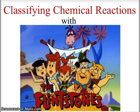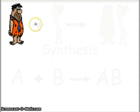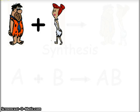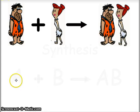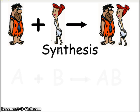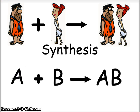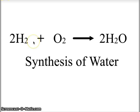We're going to classify chemical reactions using the Flintstones. Here we have Fred, and Fred meets Wilma, and together they become the Flintstones. This process of two things joining together to become one is known as synthesis: substance A plus substance B yields molecule AB. An example is the synthesis of water, where hydrogen gas plus oxygen gas gives us the molecule water. Synthesis means to combine, to put together.